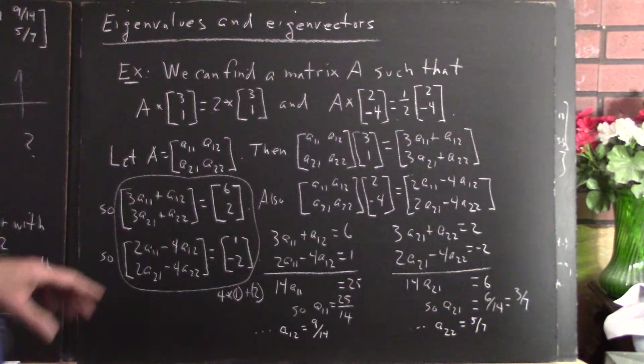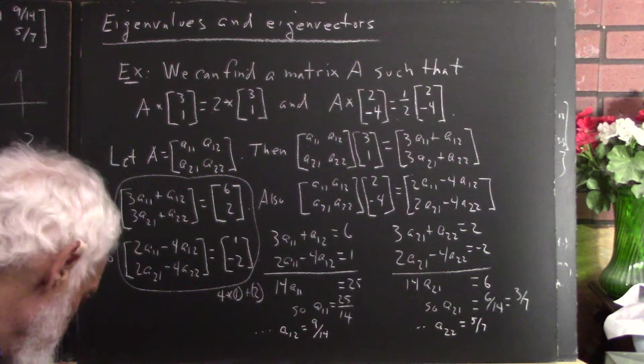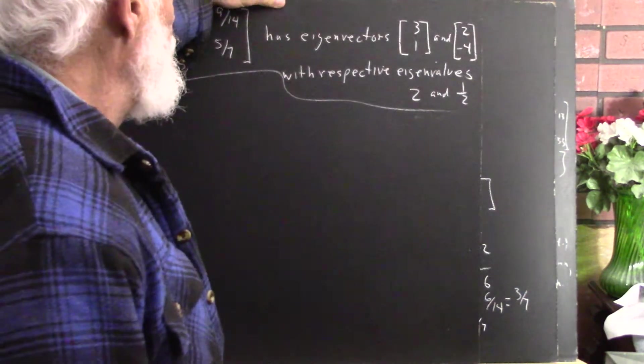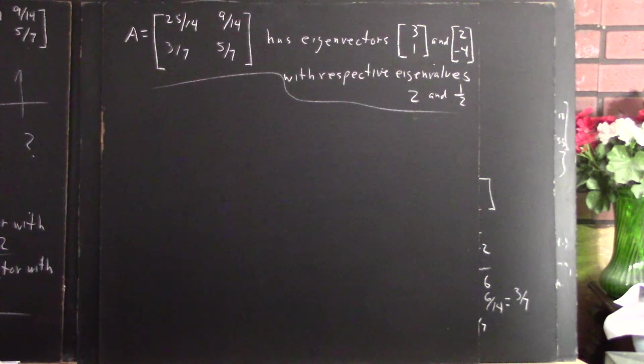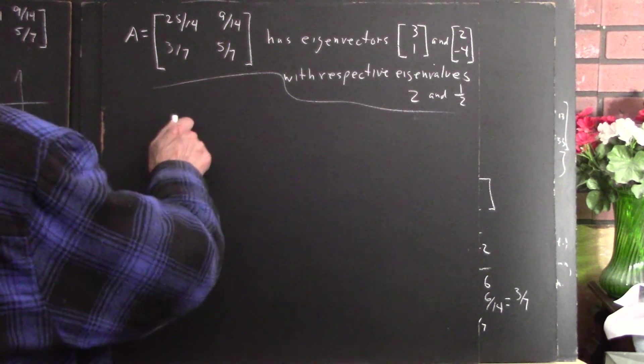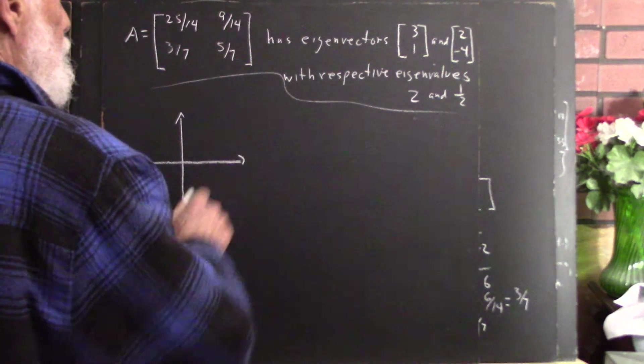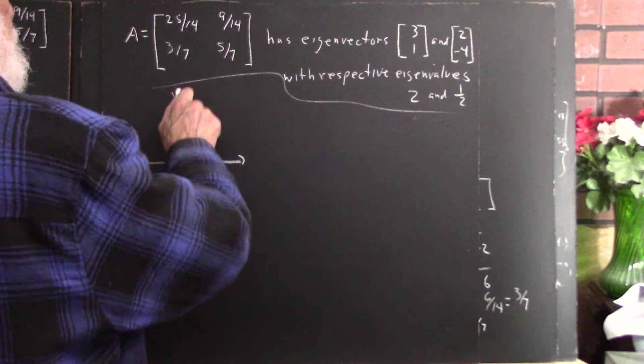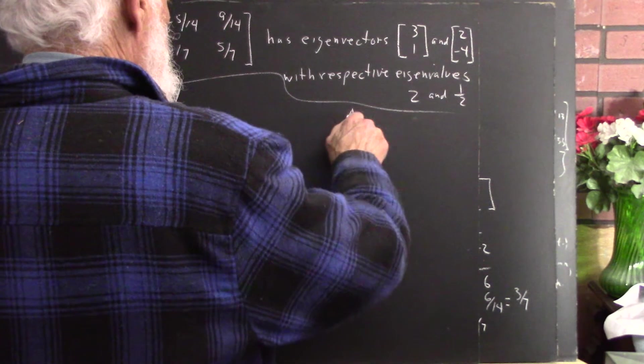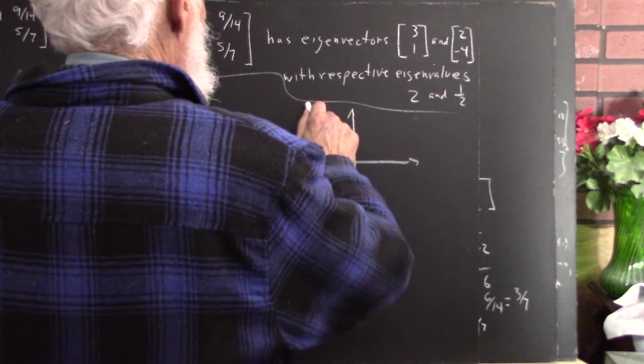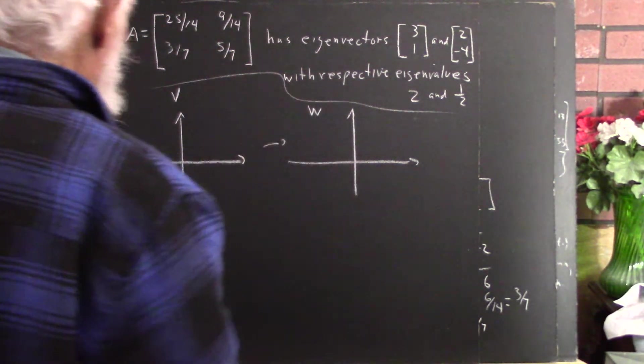Well, whether you understand that or not, this is where we are. And now we want to show what this transformation looks like. So one thing we know is if we use this matrix to define a transformation from V here over to W here, where V is one copy of R2, W is another copy of R2.